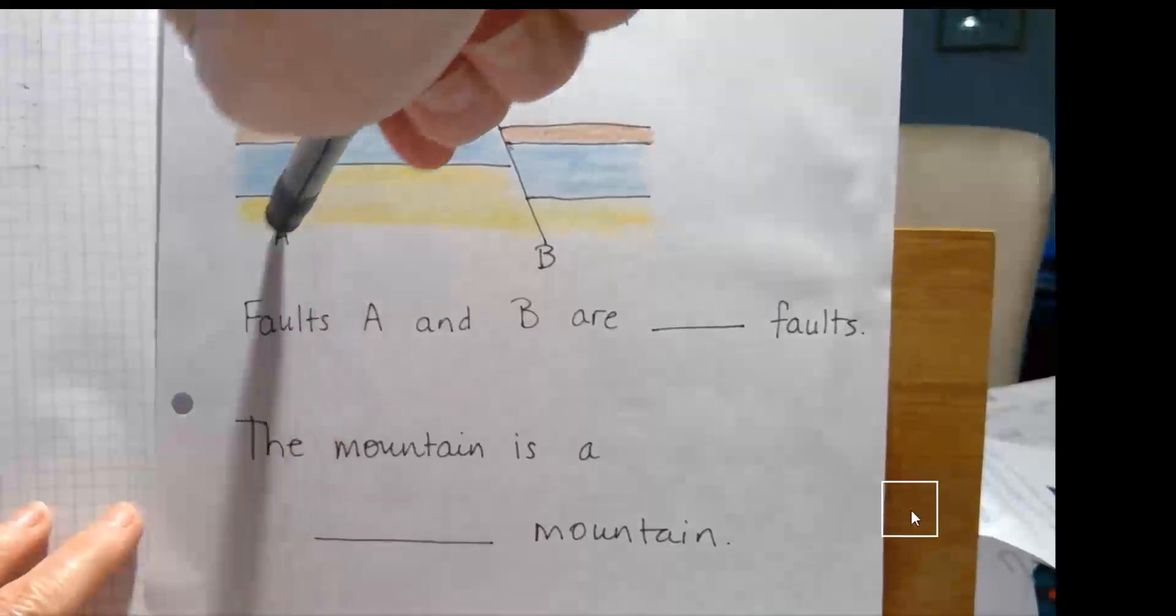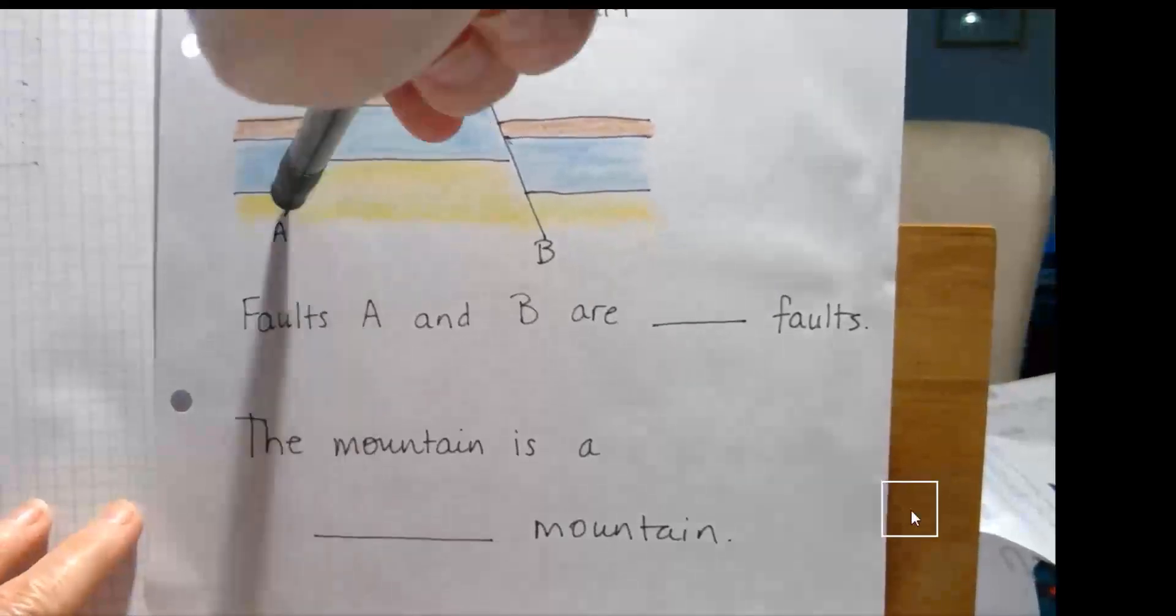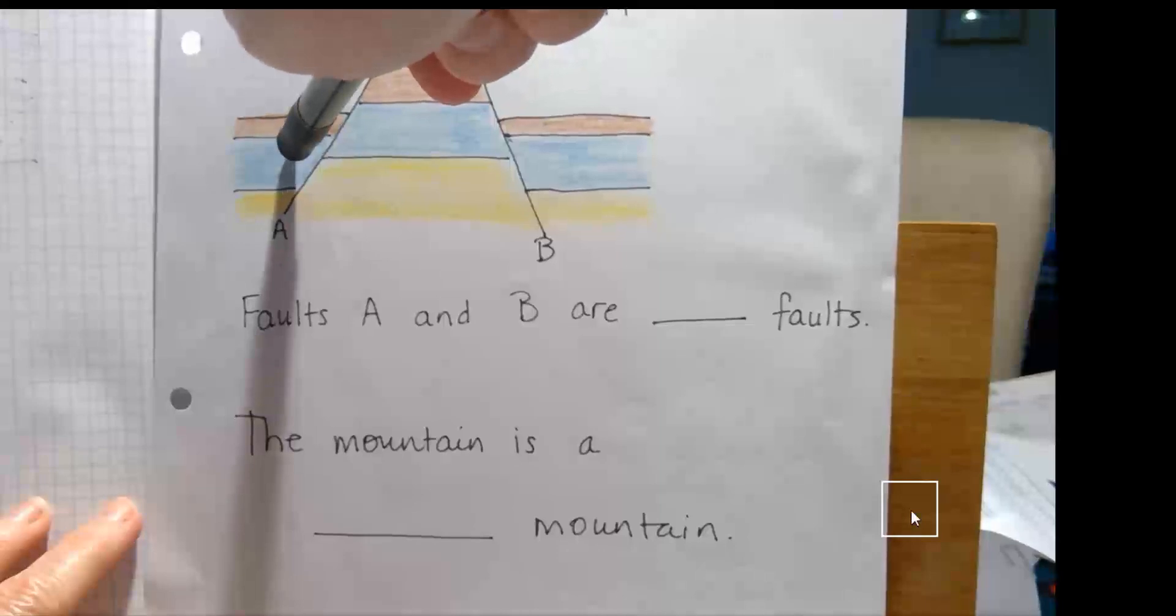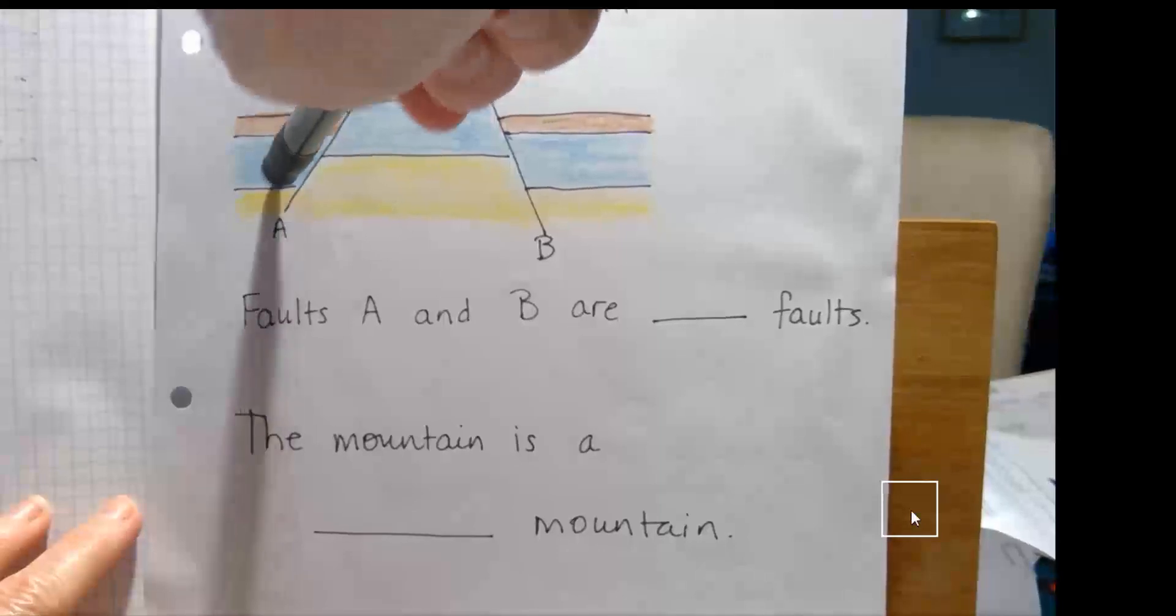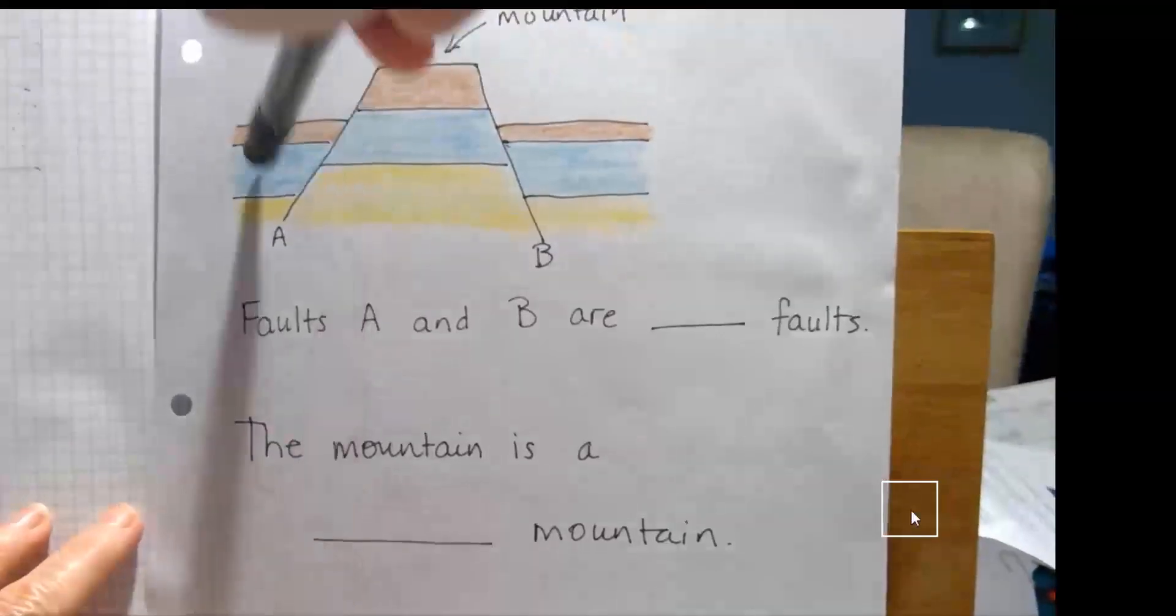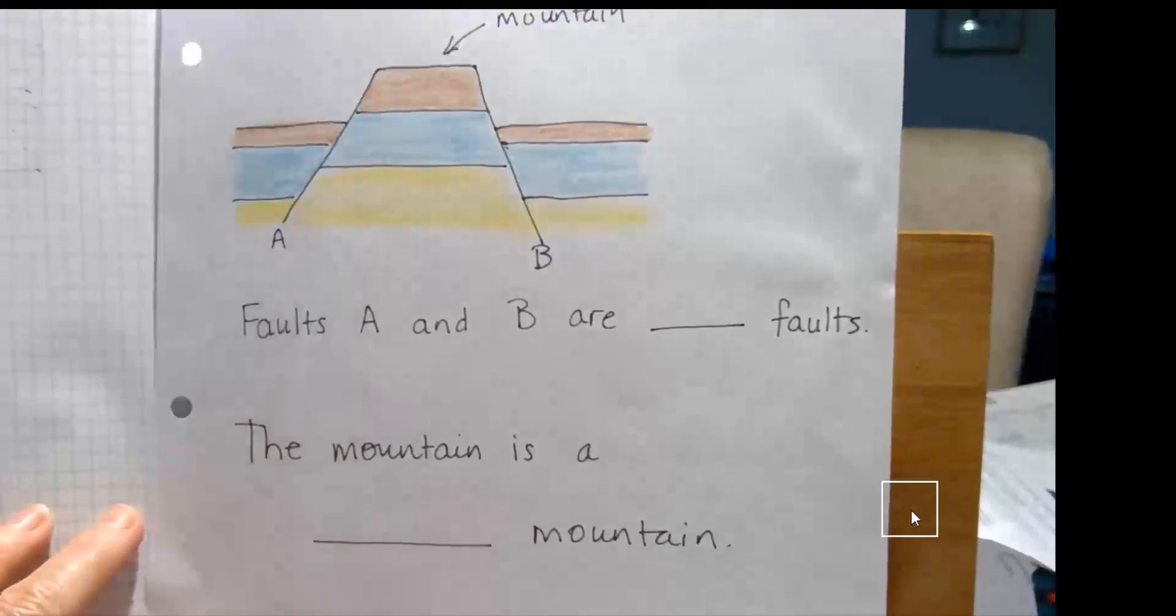Well, once again, we have the fault plane dipping in a different direction, but the block on top, the hanging wall, that shifted down relative to the foot wall. So, hanging wall down is a normal fault.